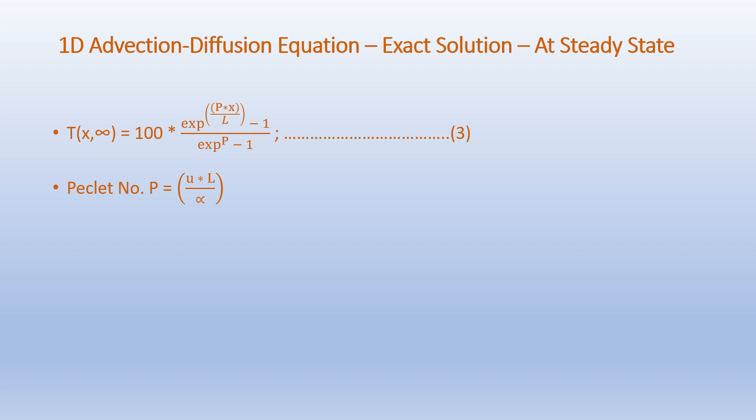The 1D advection-diffusion equation can be solved analytically at steady state, given as T(x, infinity) equals 100 times (exp(P·x/L) minus 1) over (exp(P) minus 1), where P is the Peclet number given as u·L over alpha, which is the ratio of advection to diffusion.